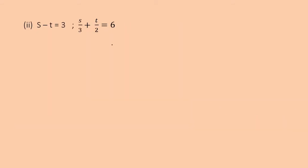Question 2: s − t = 3 and s/3 + t/2 = 6. Number them: s − t = 3 as equation 1, s/3 + t/2 = 6 as equation 2. From equation 1, write s = 3 + t. Number this as equation 3.